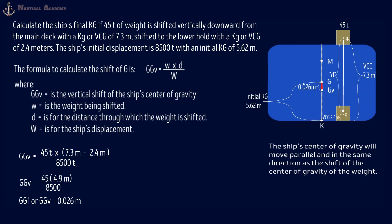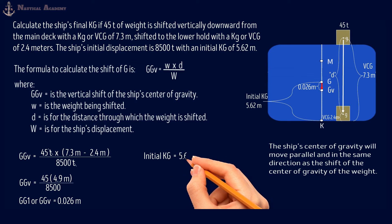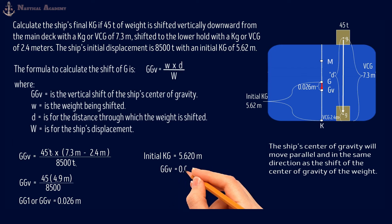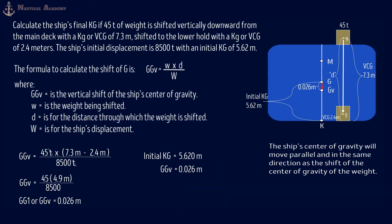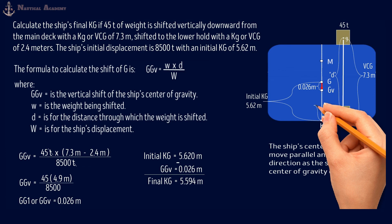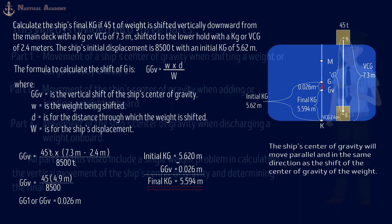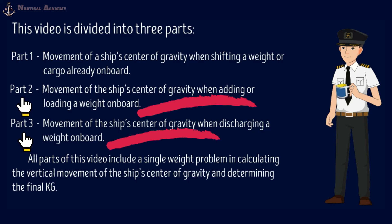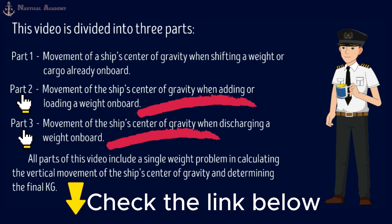To find the final KG, our initial KG is 5.62 meters. We will apply the vertical shift of G or GGV, which is 0.026 meters. Since the movement of the ship's G when shifting weight is going down, the effect will be a decrease in KG, so we will subtract GGV. The final KG is 5.594 meters. For Parts 2 and 3 of this video, which cover the effect of a ship's center of gravity when loading and discharging weight on board including the calculation of the final KG, kindly check the link in the description. That's all guys, and thank you for watching.